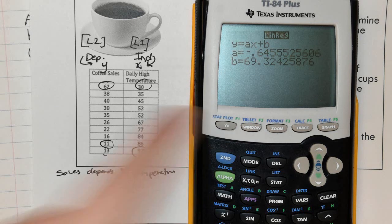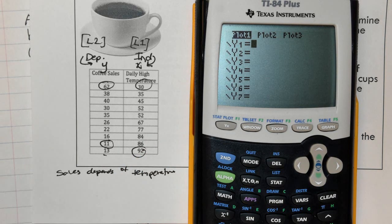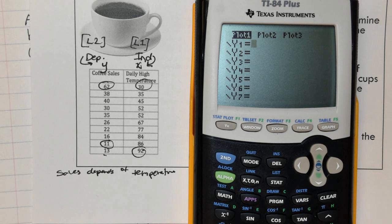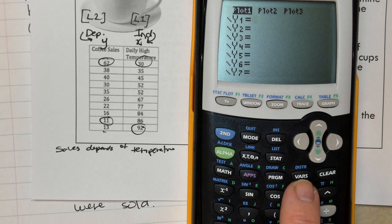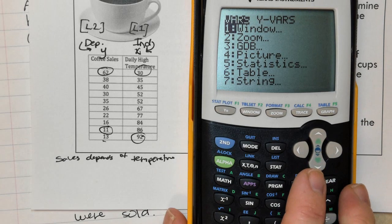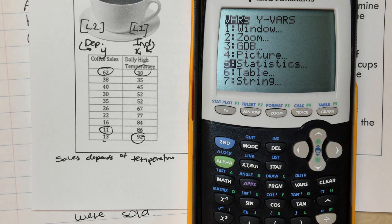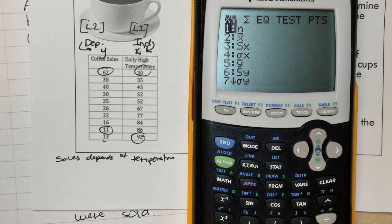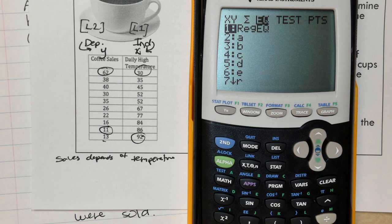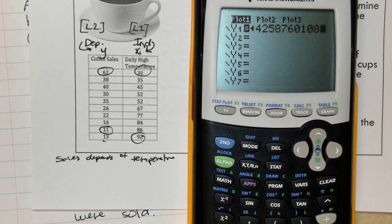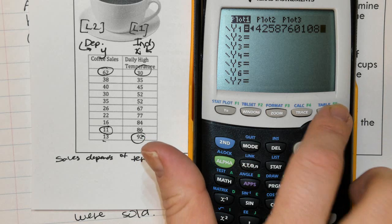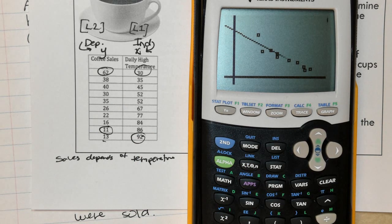I want to take exactly what this calculator has as an answer for the line of best fit, and I want to put it into the equation part. So I'm going to go up to y equals. And now to copy and paste what we previously had, I want you to find the button that says VARs and hit it one time. Go down to statistics and press enter. Go across to EQ and press enter one more time. It takes and it copies and pastes in. Now hit graph in the top right-hand corner. That is the line of best fit.